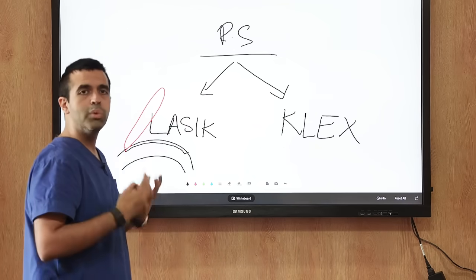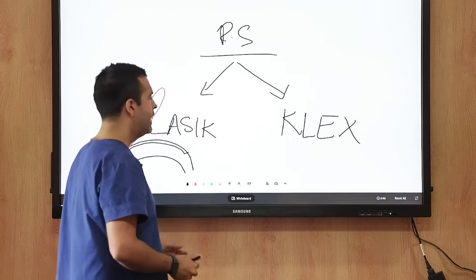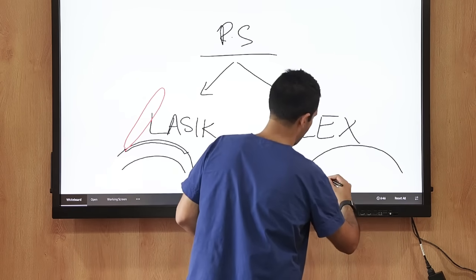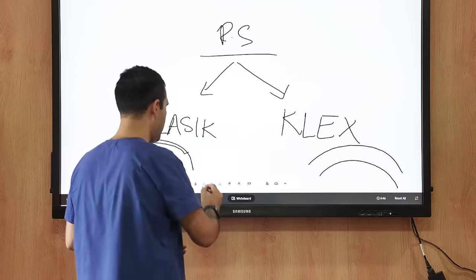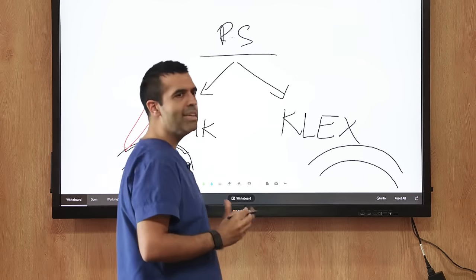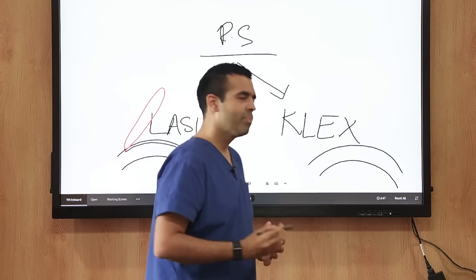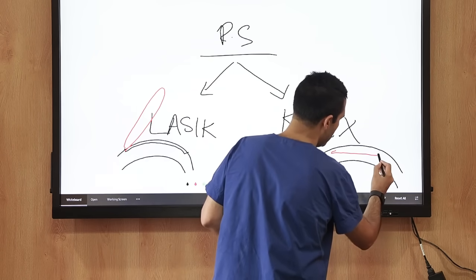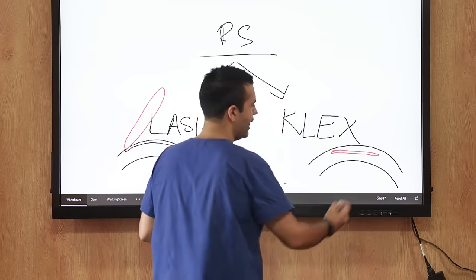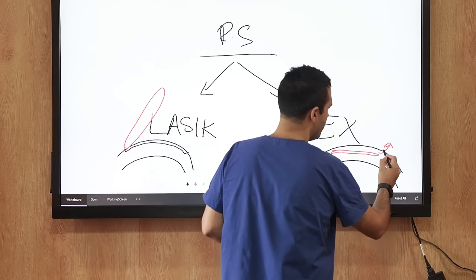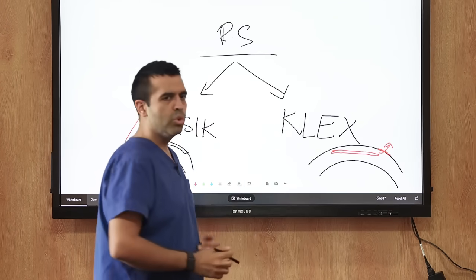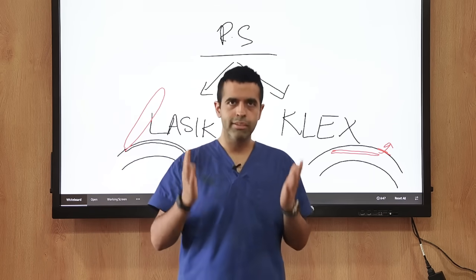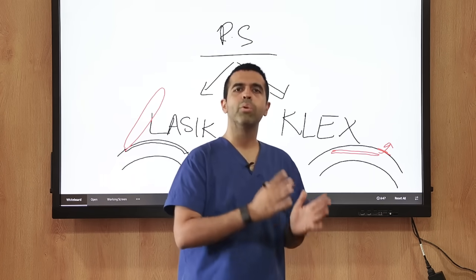But in a KLEX procedure, if this is the cornea, we are not firing a laser and making a flap. We are making a simple lenticule inside the cornea, and this is then just removed through a very small incision. This KLEX was started in 2008 by a surgeon, known as SMILE, by a company called Zeiss.